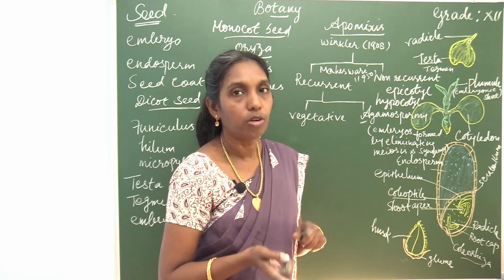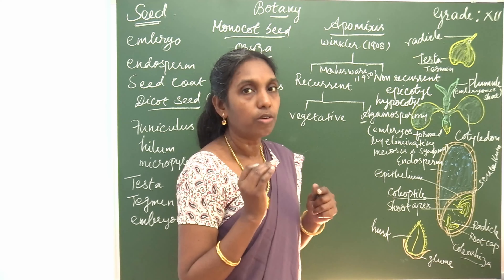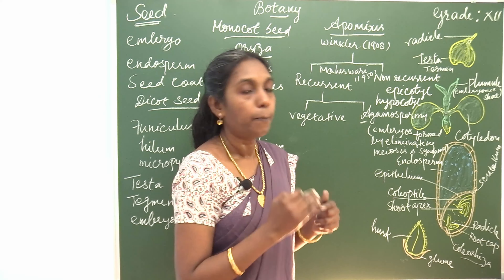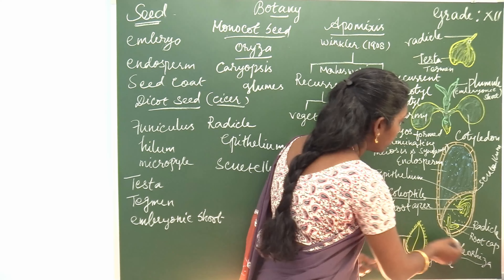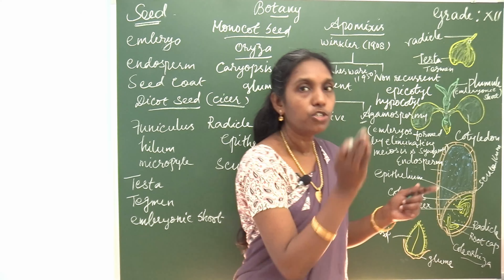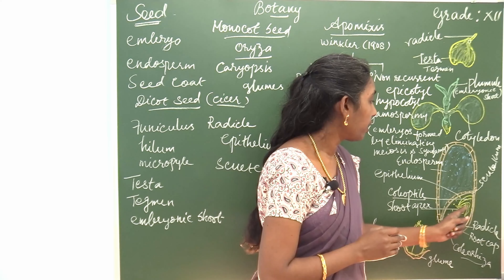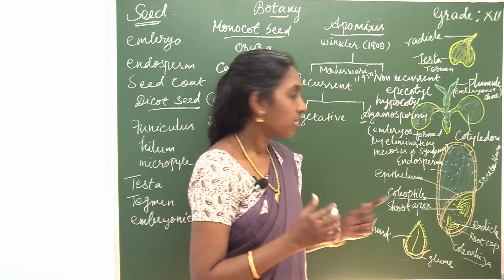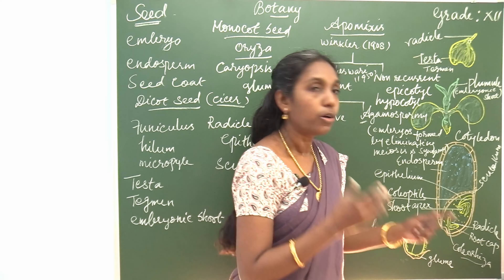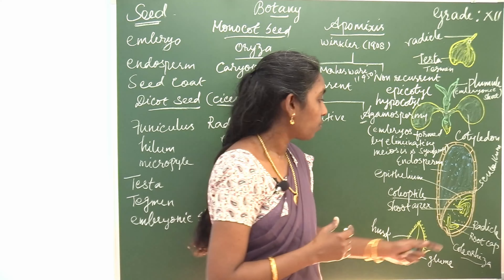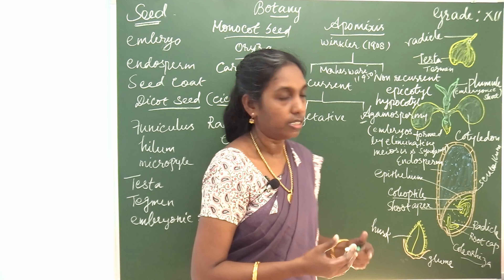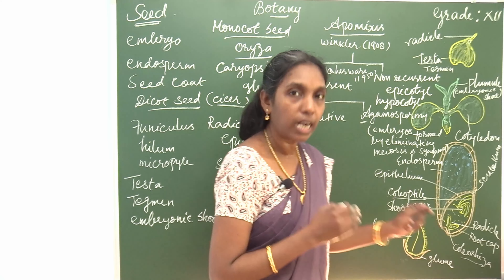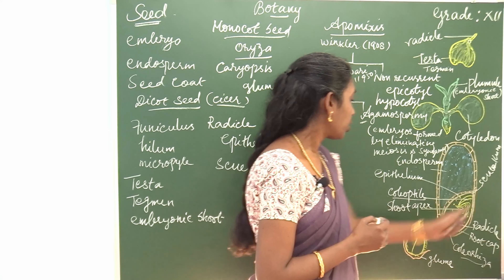The plumule part is protected by coleoptile. So remember: the root part is protected by coleorhiza, and the shoot part, the plumule, is protected by coleoptile. Plumule arises from the coleoptile and the radicle arises from the coleorhiza. The shield-shaped embryonal axis is known as scutellum.